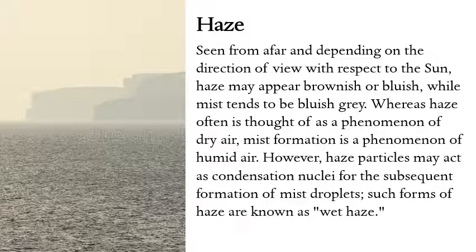Depending on the direction of view with respect to the sun, haze may appear brownish or bluish — the opalescent appearance — while mist tends to be bluish-gray. Although haze is a phenomenon of dry air and mist is a phenomenon of humid air, haze particles may act as condensation nuclei for subsequent formation of mist droplets. Such forms are known as wet haze, distinct from the dry particulates from factories, vehicles, and industry.